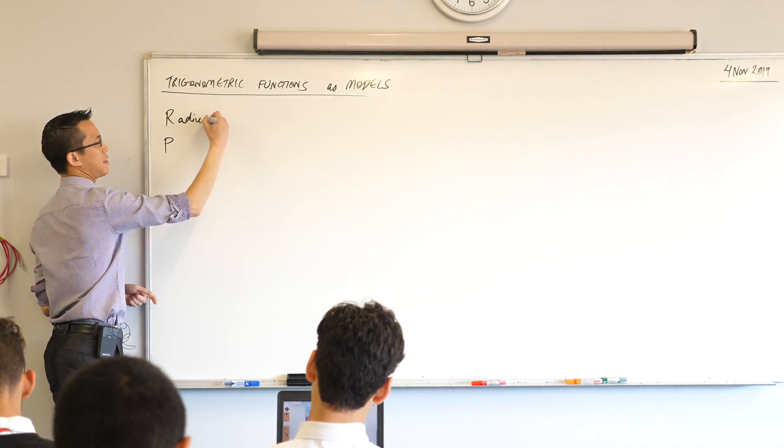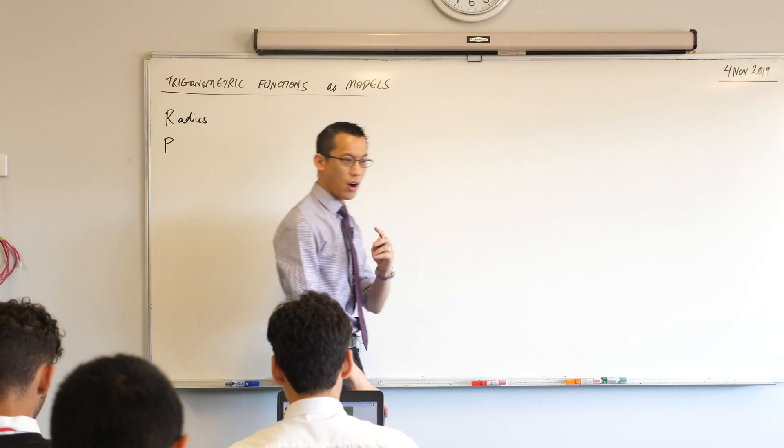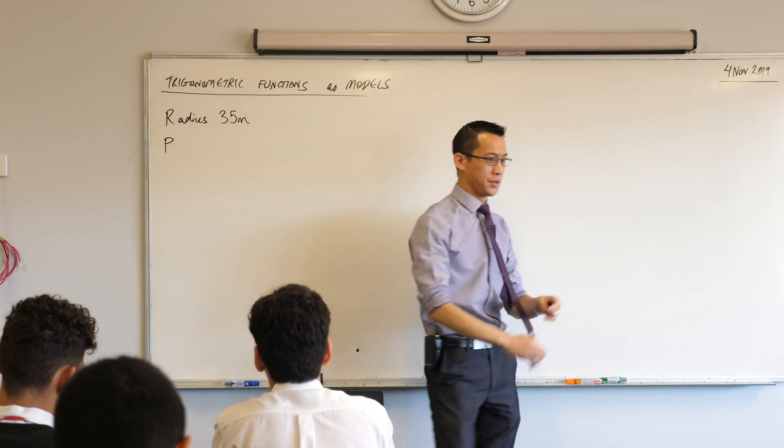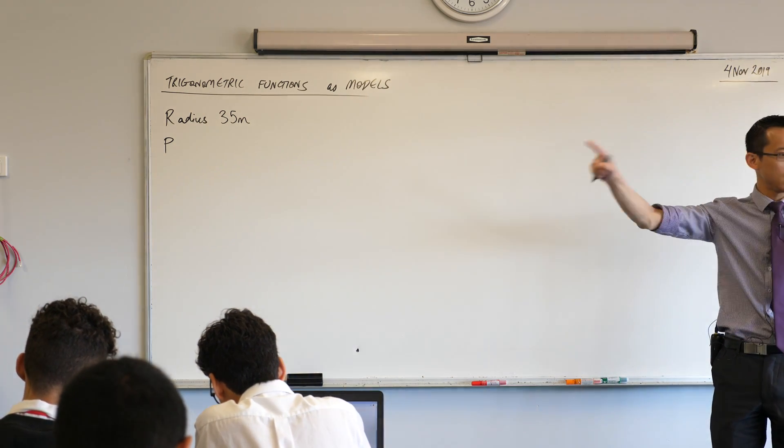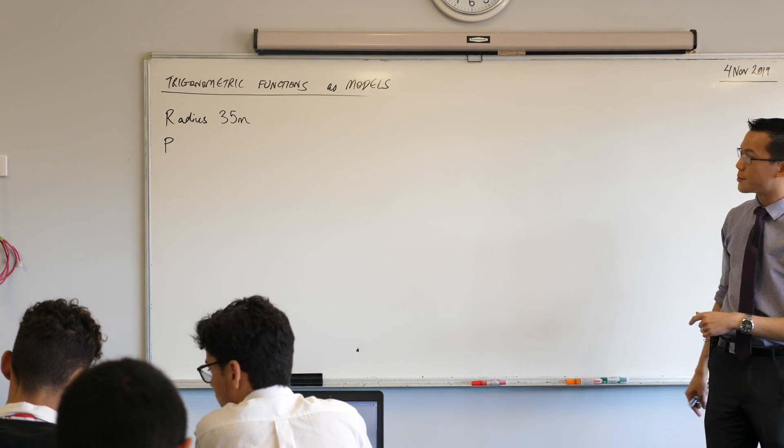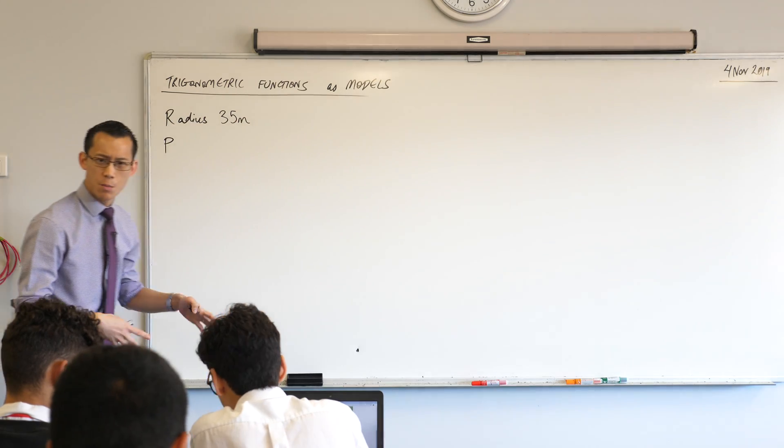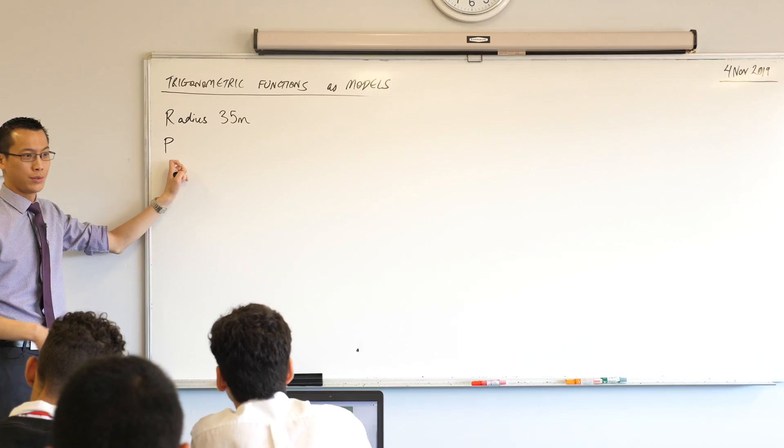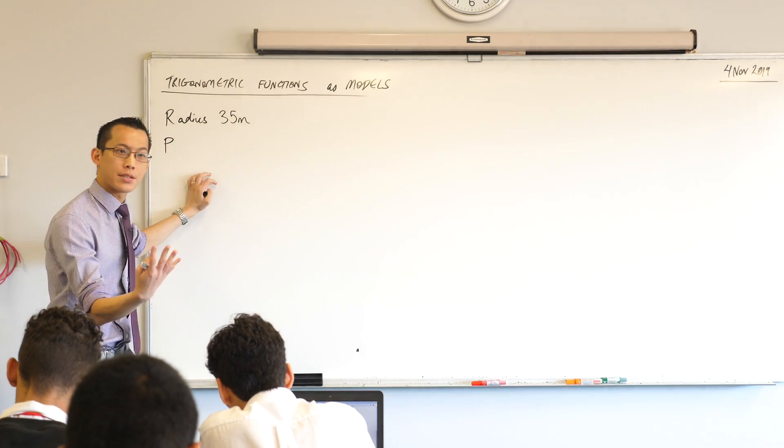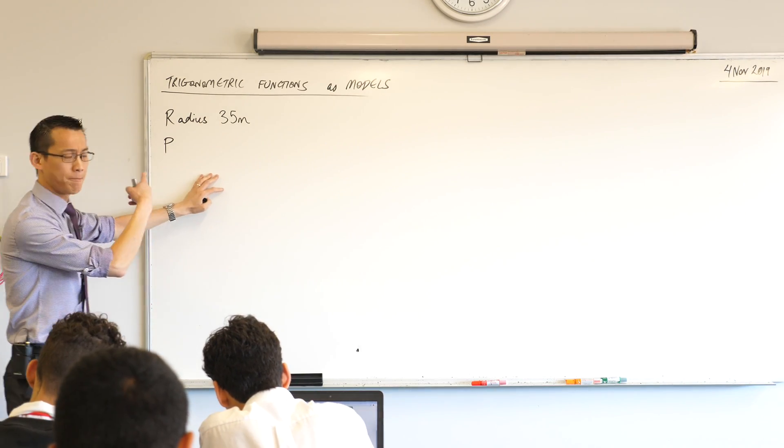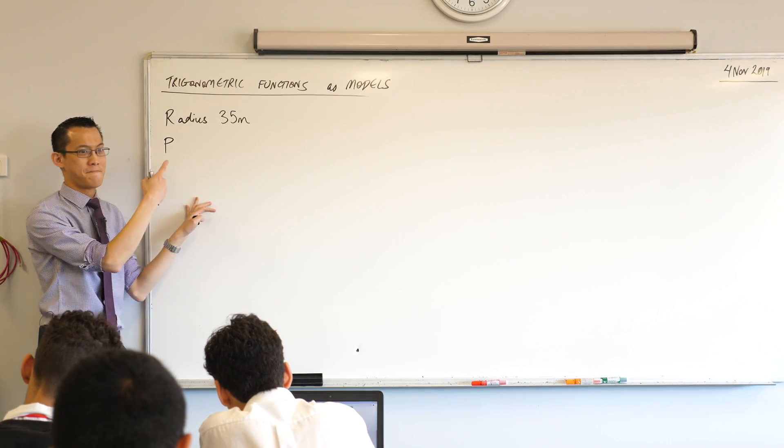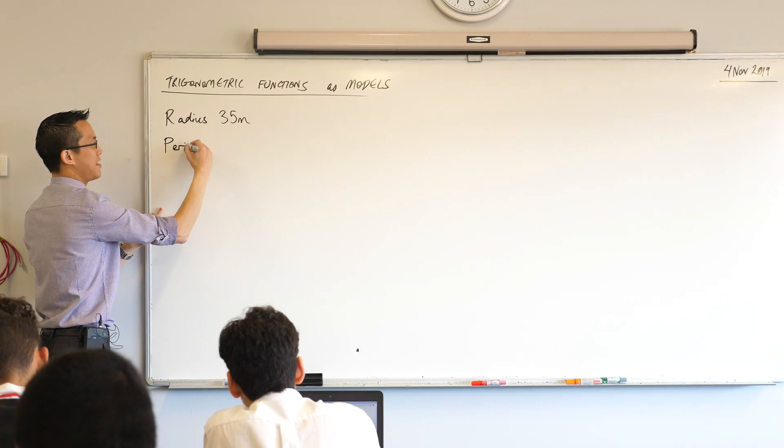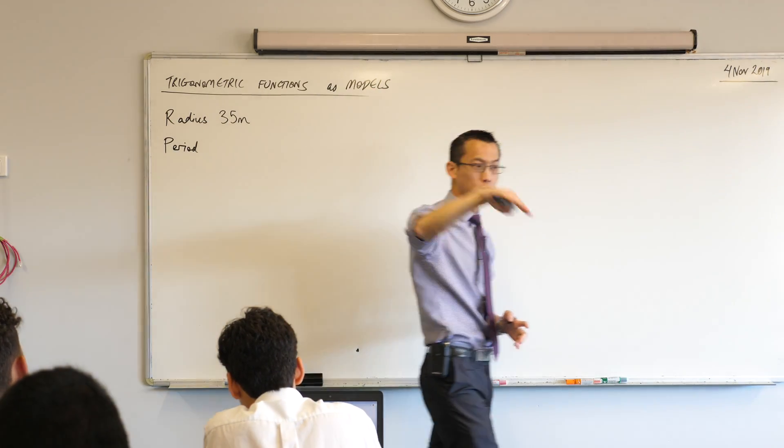I'm going to give you a few pieces of information that will tell us everything we need to know about this Ferris wheel. So first we need to know how big it is. So I'm going to give you the radius of this particular Ferris wheel we're interested in. It's 35 metres from the centre of the wheel to any of the points on the edges. We also need to know how fast it's moving. So when you're describing a trigonometric function, which aspect of it describes the speed of the motion? What would we call that?